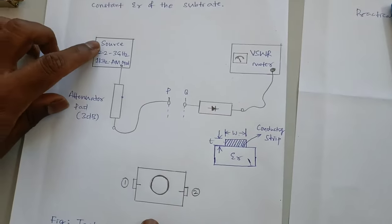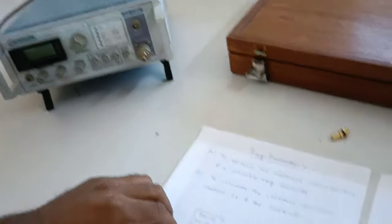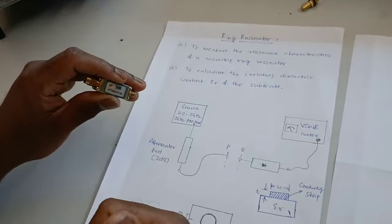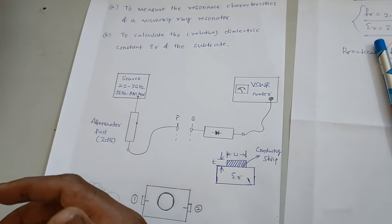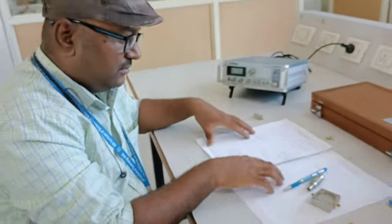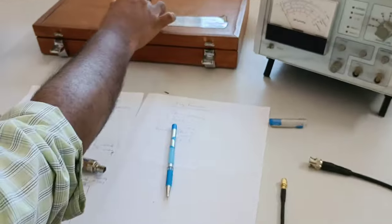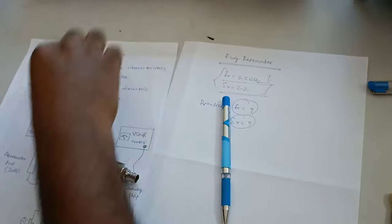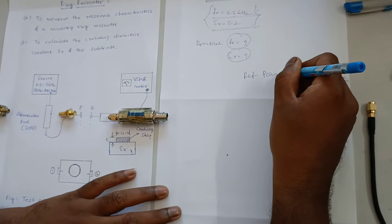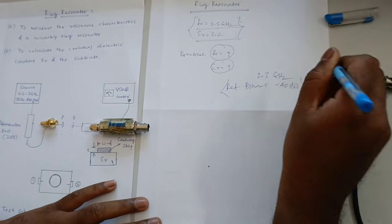So just go through this block diagram. There is a first block source that is 2 to 3 Giga, 1 KHz AM modulation. This is the source as I told. And this is attenuator pad 3 dB. The work of this attenuator is whatever power coming from the source, that will be reduced by 3 dB. Suppose 40 dB if it is coming from the source itself. So minus 40, minus 3, it will be minus 43 dB. And this is the detector and this is the VSWR meter. Initially what we will do is, we will keep this ring resonator apart from this setup. Just we will do the initial setup, basic setup and take some reference power. Reference power, minus 40 dB. Frequency, 2.3 Gigahertz.